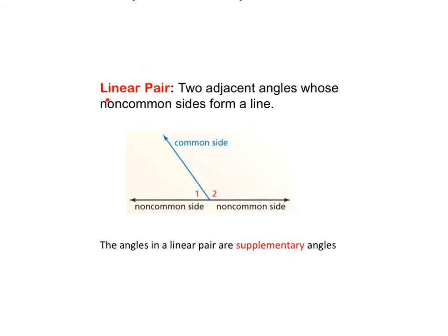Linear means a line, right? So two adjacent angles whose non-common sides form a line.